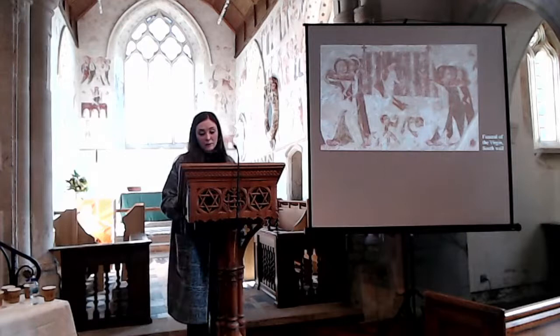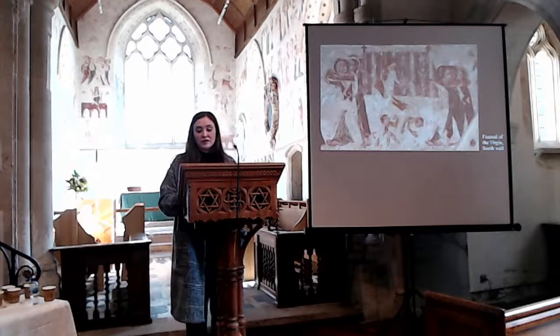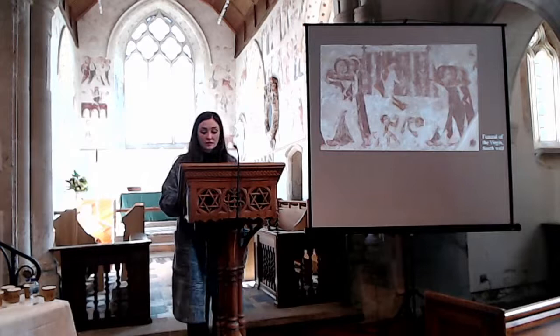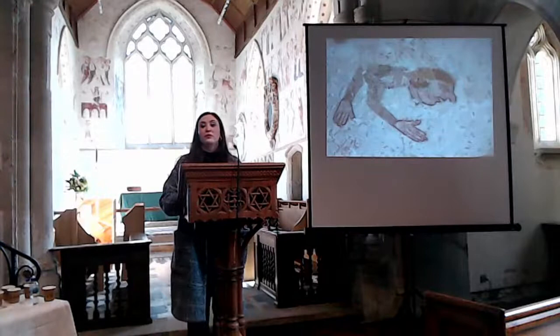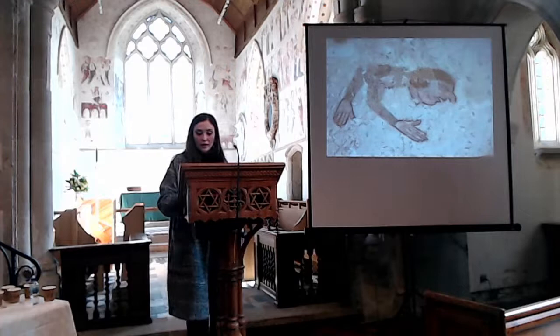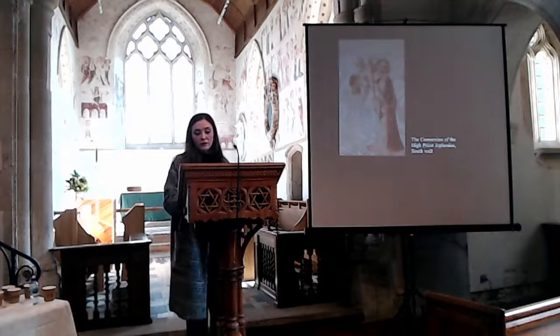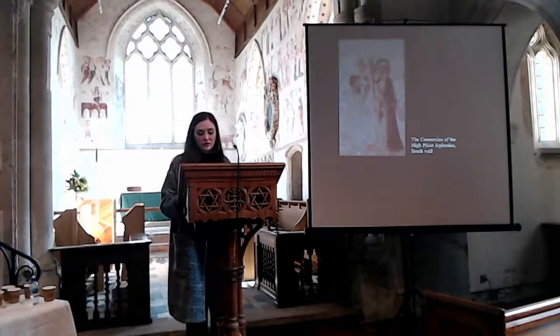In the Golden Legend, this informs us that their goal was to tip the bier, burn the Virgin's body, and scatter her ashes to the wind. However, as we can see in the paintings, upon touching the bier, the lead man's hand is miraculously stuck to the object containing the Virgin's body. In literary sources, we are informed that he is only released when he verbally expresses his belief both in the Virgin Mary and that her son is the Son of God. We can see this conversion happening in the next scene, when the High Priest Jephonius is shown kneeling before St. John the Evangelist and is healed by the Virgin's palm of paradise.